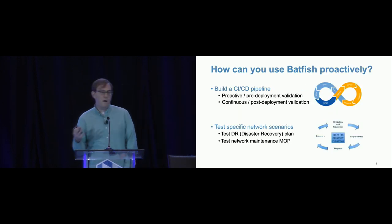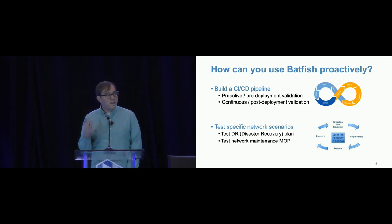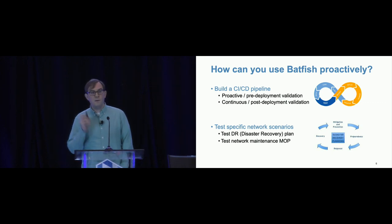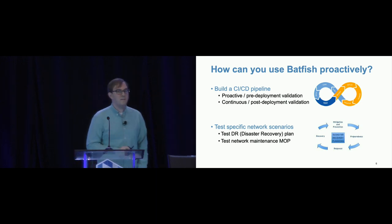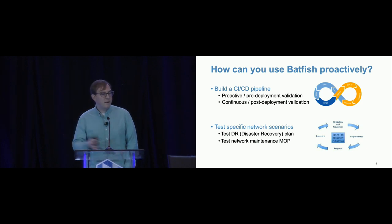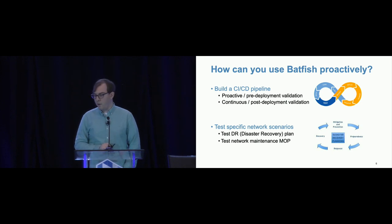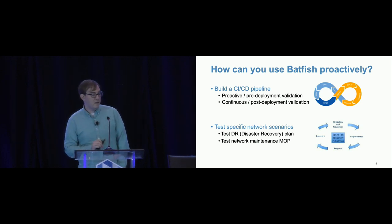Once you have these capabilities, how can you use Batfish to be proactive about your network? One thing we're really trying to encourage is building a CI/CD pipeline for your network. You can do proactive analysis by testing out changes you're going to make before you deploy them. You can also do continuous testing by downloading the running config every night, seeing everything that's different, making sure that even if someone manually logged into devices outside your normal workflow, those changes haven't messed up your network's configuration correctness, compliance, or security and reliability policies.